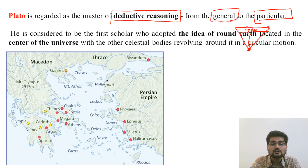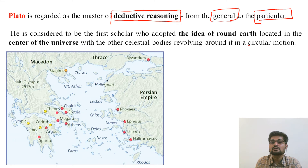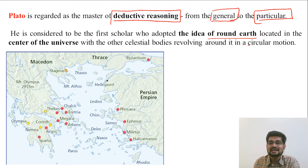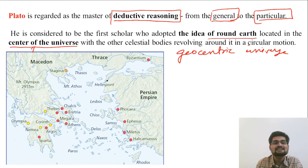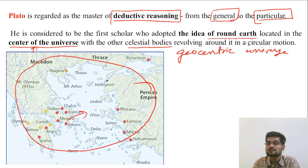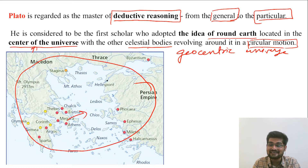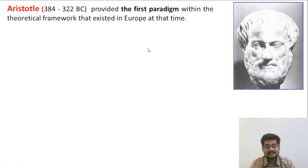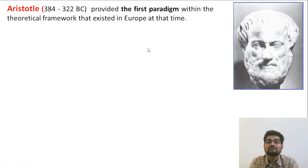Plato also supported the idea of a round earth, which became widely accepted. He also proposed the geocentric universe — the idea that earth is the center of the universe and that all celestial bodies revolve around it in circular motion. His disciple was Aristotle, the famous scholar whose contributions we look at next.